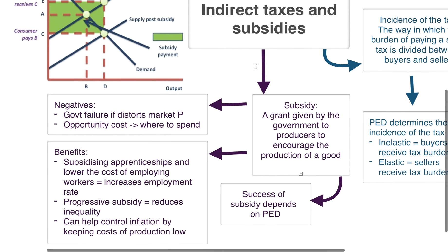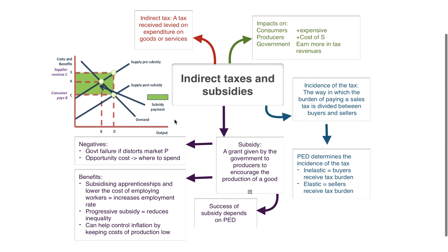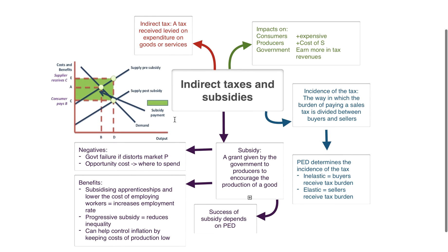However, there are bad points to subsidies. There could be government failure — if the government provides an inefficient subsidy, it can distort the market price. This is bad because free markets won't allow the pricing mechanism to distribute resources efficiently, which might lead to an inefficient allocation of resources. The economic problem is essentially about allocating resources efficiently, so this is why it's problematic.